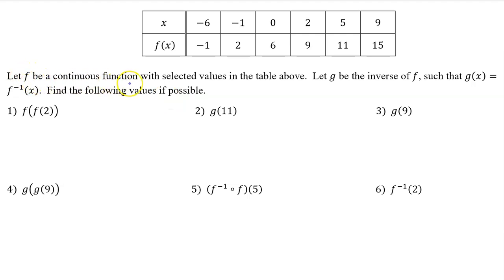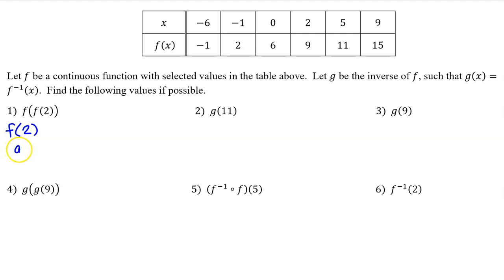Let f be a continuous function with selected values in the table above. Let g be the inverse of f such that g equals f inverse. Find the following values if possible. Number 1: working from the inside out, we begin with f at 2. f at 2 is 9. Moving to the outer function, we see another f of x, so we must now evaluate f at 9. f at 9 is 15.